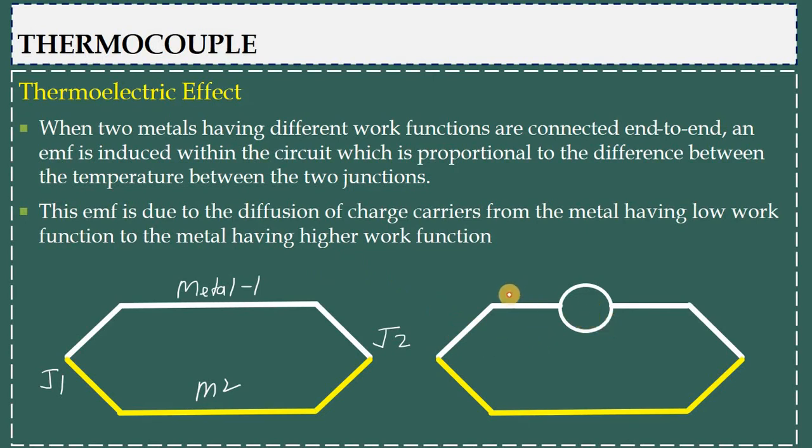If I have two different metals M1 and M2, and I connect them end-to-end so that one junction becomes J1 and the other junction becomes J2, then if there is a temperature difference, an EMF will be induced in this circuit. This electromotive force is induced because of the difference in the work function.